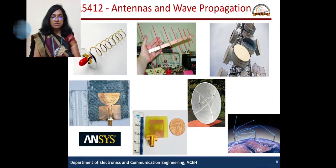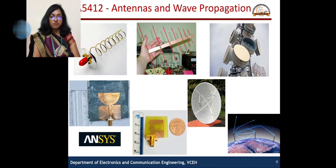Coming to the present course, Antennas and Wave Propagation, this course enables graduate students to understand the radiation mechanism of various antenna structures and to interpret the different types and modes of wave propagation in wireless communication systems.